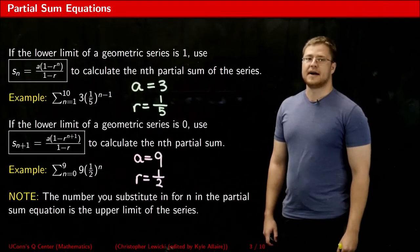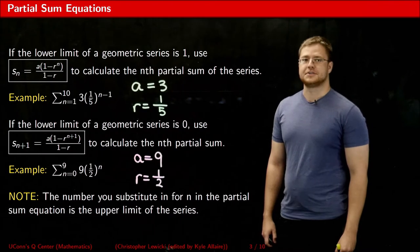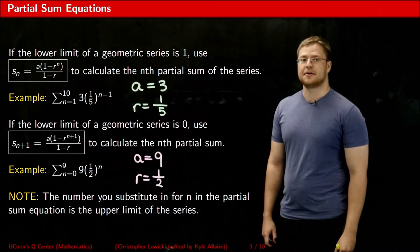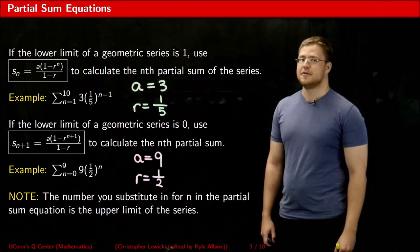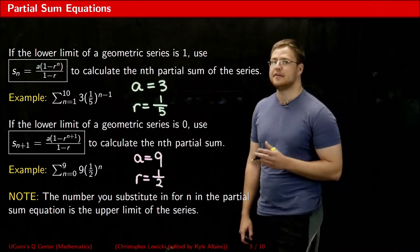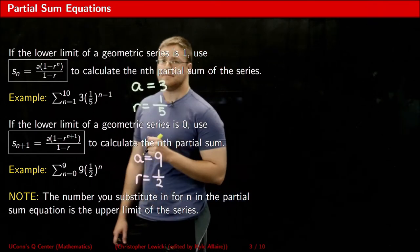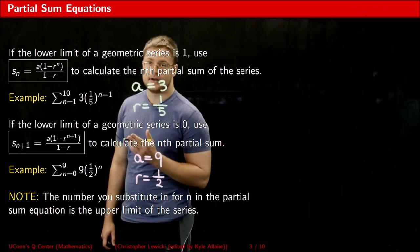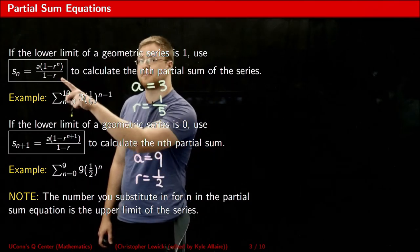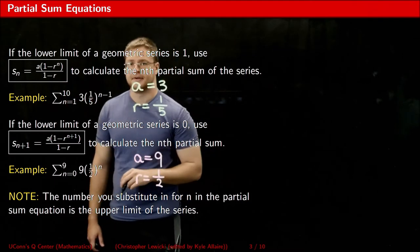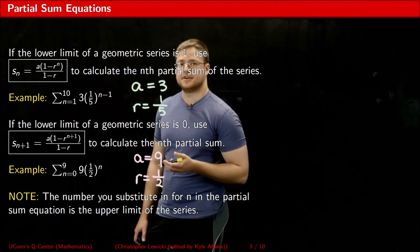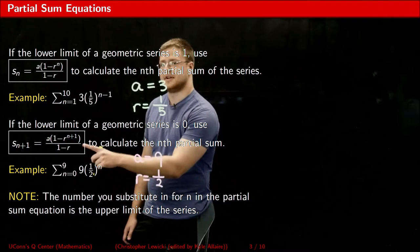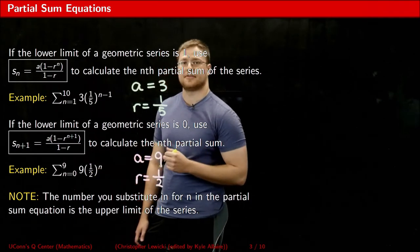The reasons why some geometric series converge and others diverge come from the partial sum formula. As a friendly reminder of what I was talking about in part two, the partial sum formula has two slightly different versions. If the lower limit of the geometric series you're trying to take a partial sum of is one, then you use this version of the partial sum formula. If the lower limit is zero, then you use this version in order to calculate the sum.